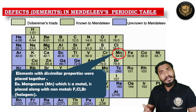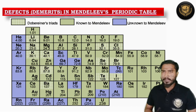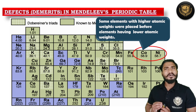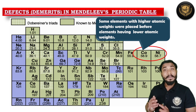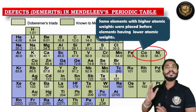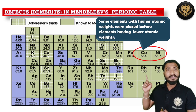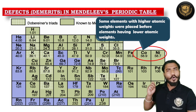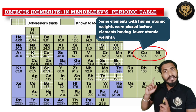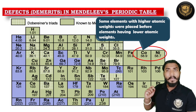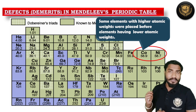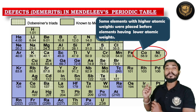The next demerit was that certain elements with higher atomic masses were placed before elements with lower atomic masses. For example, Cobalt has a mass of 58.9 and Nickel has a mass of 58.7. According to increasing atomic masses, Nickel should come first followed by Cobalt. But in Mendeleev's table, Cobalt was placed first and then Nickel, and Mendeleev was unable to explain the reason behind this placement.